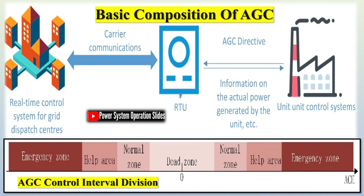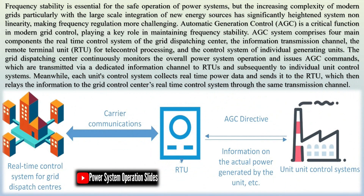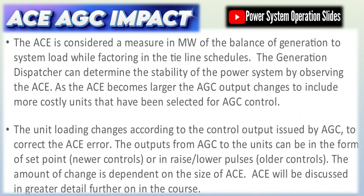AGC is a key enabler in transitioning to cleaner energy while upholding power system security and performance. AGC is a real-time control mechanism in power systems that continuously adjusts the output of multiple generators. Its main mission is to balance generation and load so that the system frequency stays near its nominal value — typically 50 or 60 Hz — and the power exchanged via tie lines with neighboring control areas remains as scheduled. AGC acts as the grid's balancing act by rapidly compensating for load fluctuations, renewable output variability, or even generator outages.